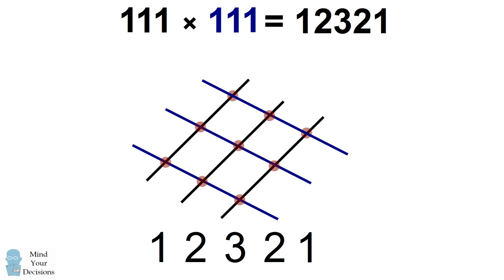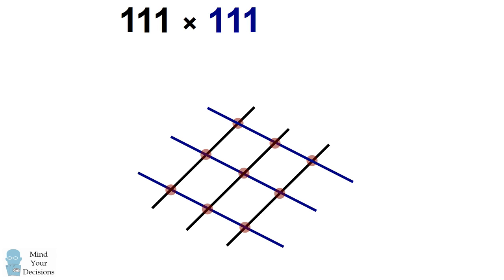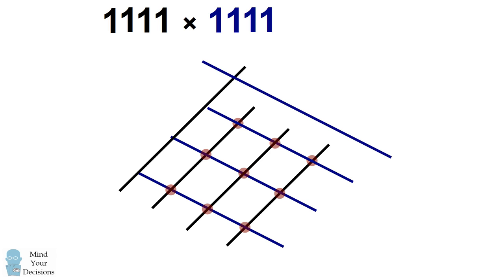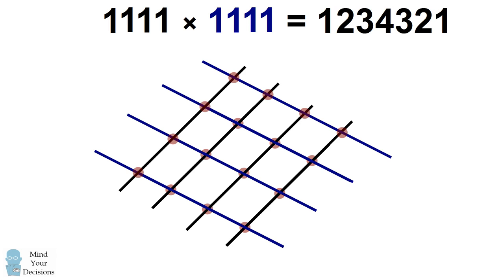In fact, this pattern continues. Let's extend this to 1,111. We draw one more line for the first number and one more line for the second number, then extend the existing lines to create the intersections — ending up with another lattice grid. The new intersections add one on the far left, one to each of the existing columns, and one on the far right. So when we count up the vertically aligned intersections, we end up with 1, 2, 3, 4, 3, 2, 1. You can see how this pattern continues.